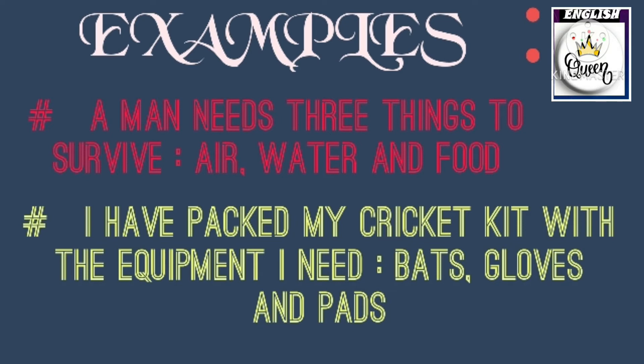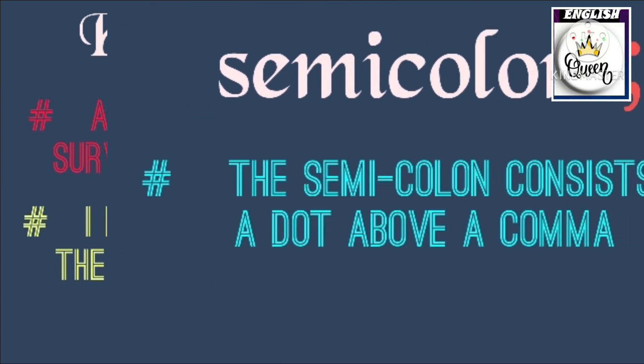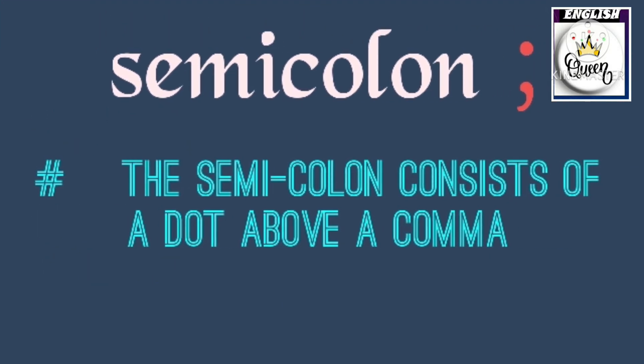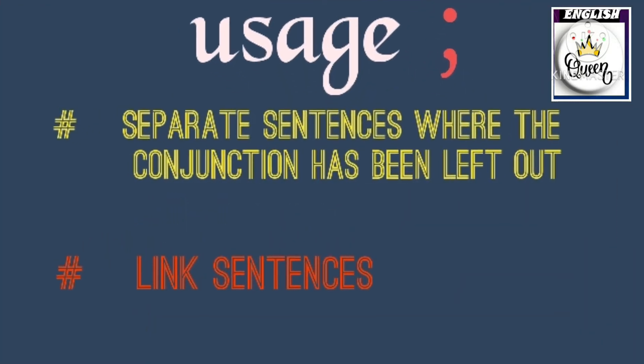Now we'll move on to the semicolon. A semicolon consists of a dot above a comma. Its usage is to separate sentences where the conjunction has been left out — that is, it is used to link two sentences together.